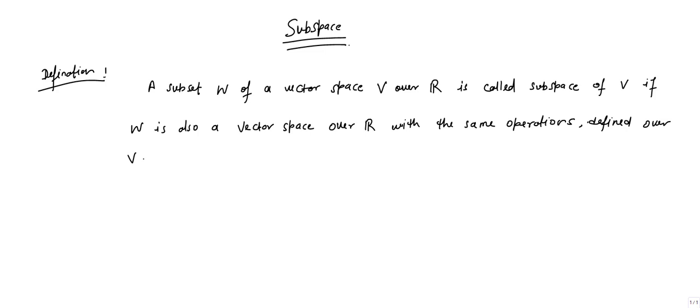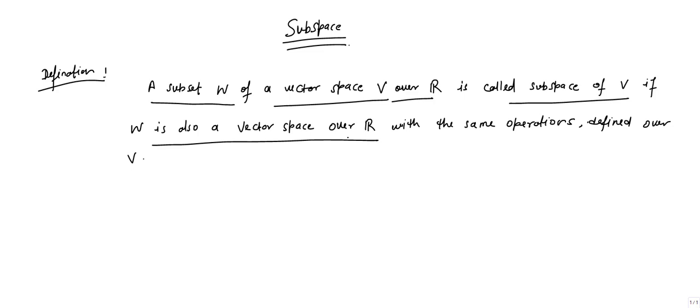Hello guys, today we will discuss about the subspace. What is subspace? Suppose V is a vector space, then a subspace is actually a subset of vector space V, denoted W, having some special properties. Suppose W is a subset of a vector space V over R. We call W a subspace of V if W is also a vector space over R, with the same operations as those on V.